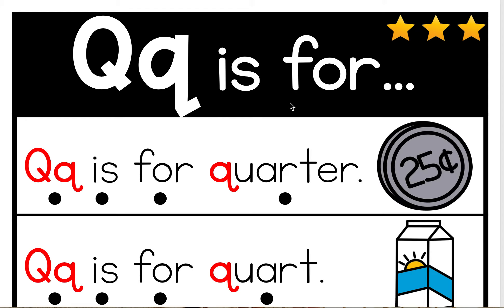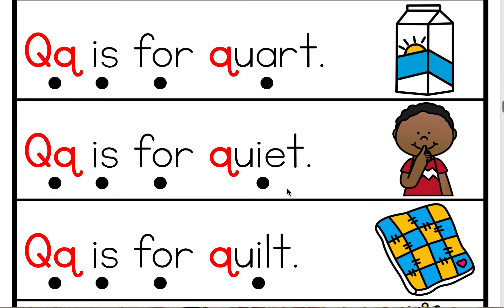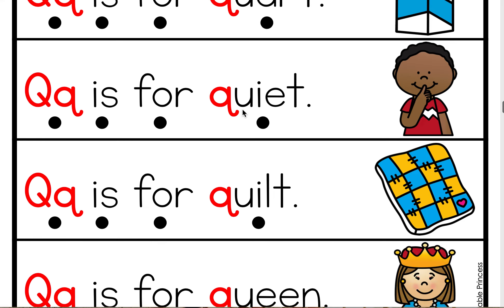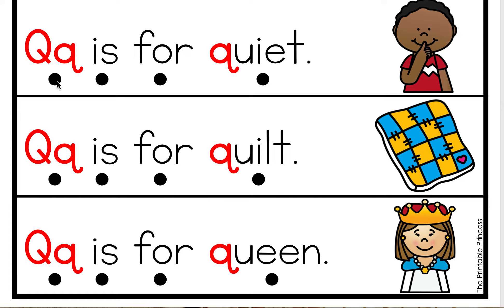Let's move on to our beginning sound sentences. I'm going to read the line first and then we'll read it together. Coo is for quarter. Let's do it together — coo is for quarter. Good job friends.